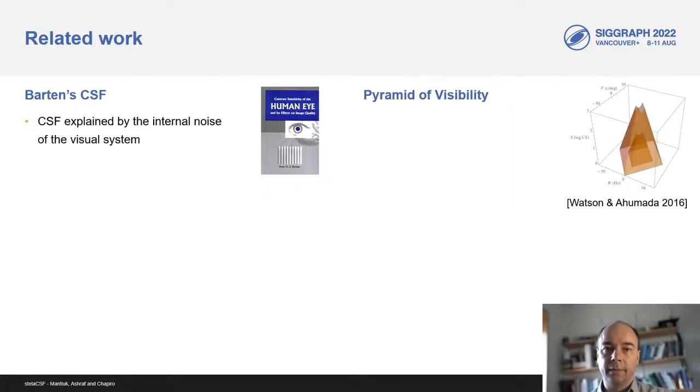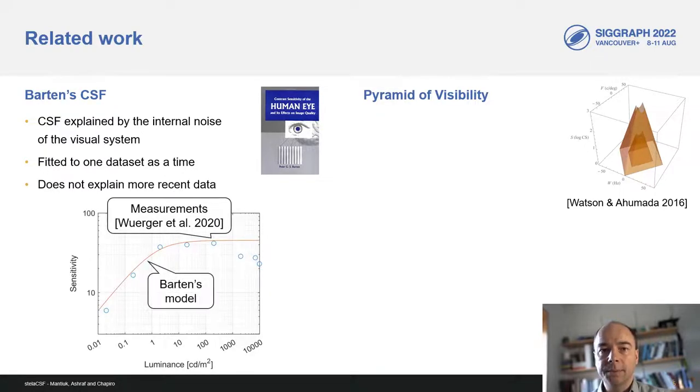So what CSF models are available? Probably the most popular is the CSF model of Barton. Barton's model explains contrast sensitivity by the internal noise of the visual system and it has sound foundations. There are however two major problems with Barton's model. First, it was fitted to one dataset at a time. So depending which dataset we choose for fitting, we end up with different models having very different parameters. Second, we observe that Barton's CSF model cannot explain the more recent CSF measurements, especially for high HDR luminance levels.